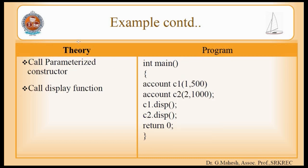We do not have to call the constructor explicitly. While declaring objects of the account class, we pass the parameters — account number and balance — when creating each object. After that, the data members of C1 and C2 are displayed using the disp function.